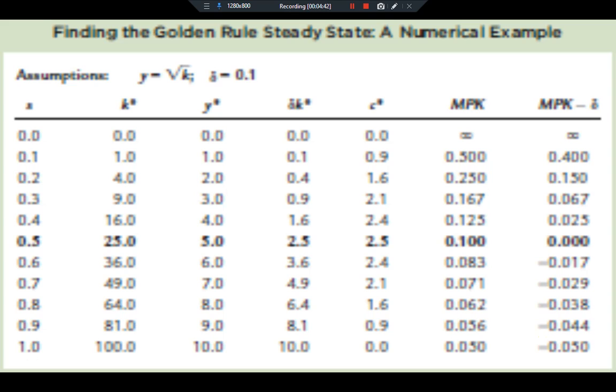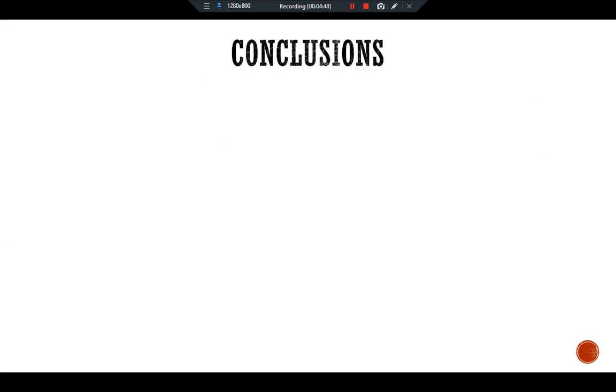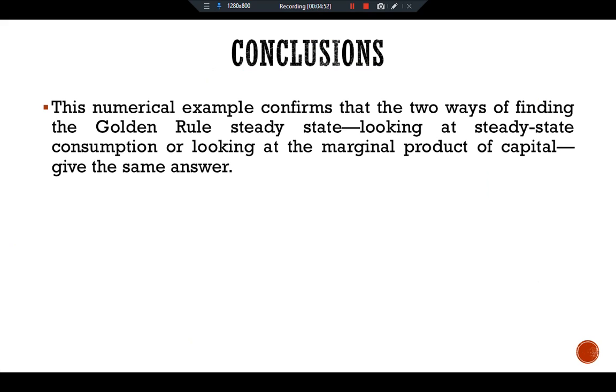Here we have the conclusion for this numerical example. This numerical example confirms the two ways of finding the golden rule steady state: looking at steady state consumption or looking at marginal product of capital gives the same answer.